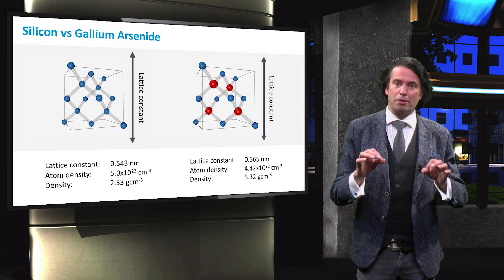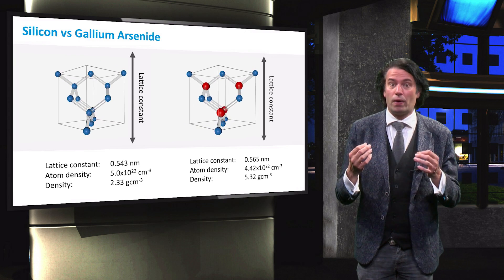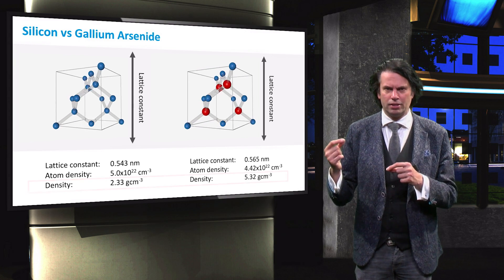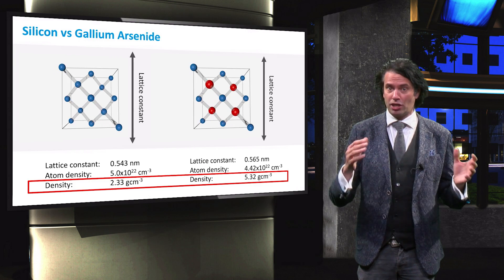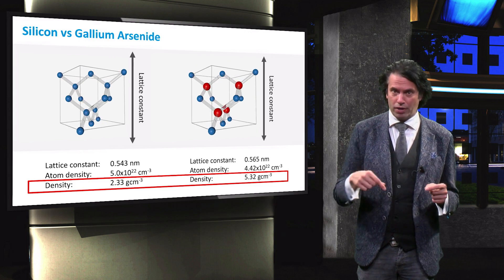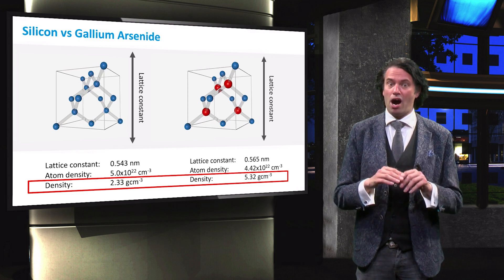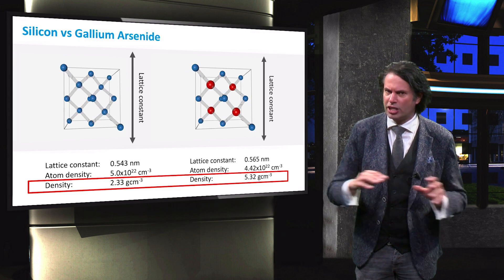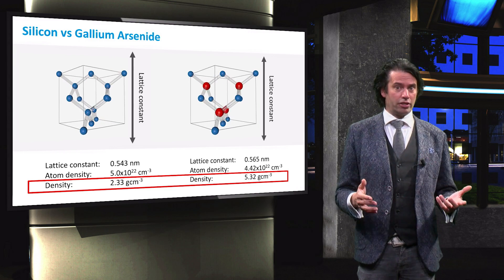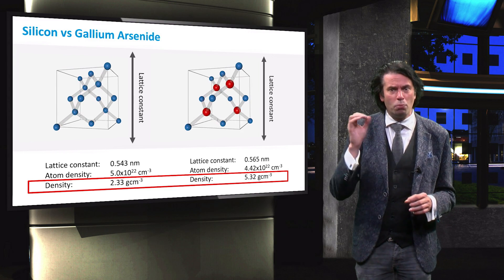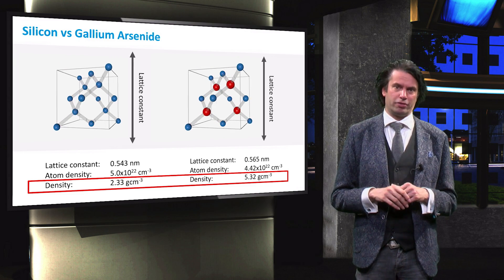Important to note is that both gallium and arsenic are more than twice as heavy as silicon, and therefore the density of a cubic cell of gallium arsenide is more than twice as heavy as a cell of crystalline silicon. This means that a gallium arsenide wafer, having the same dimensions and thickness as a silicon wafer, will weigh almost four times as much as the silicon wafer.